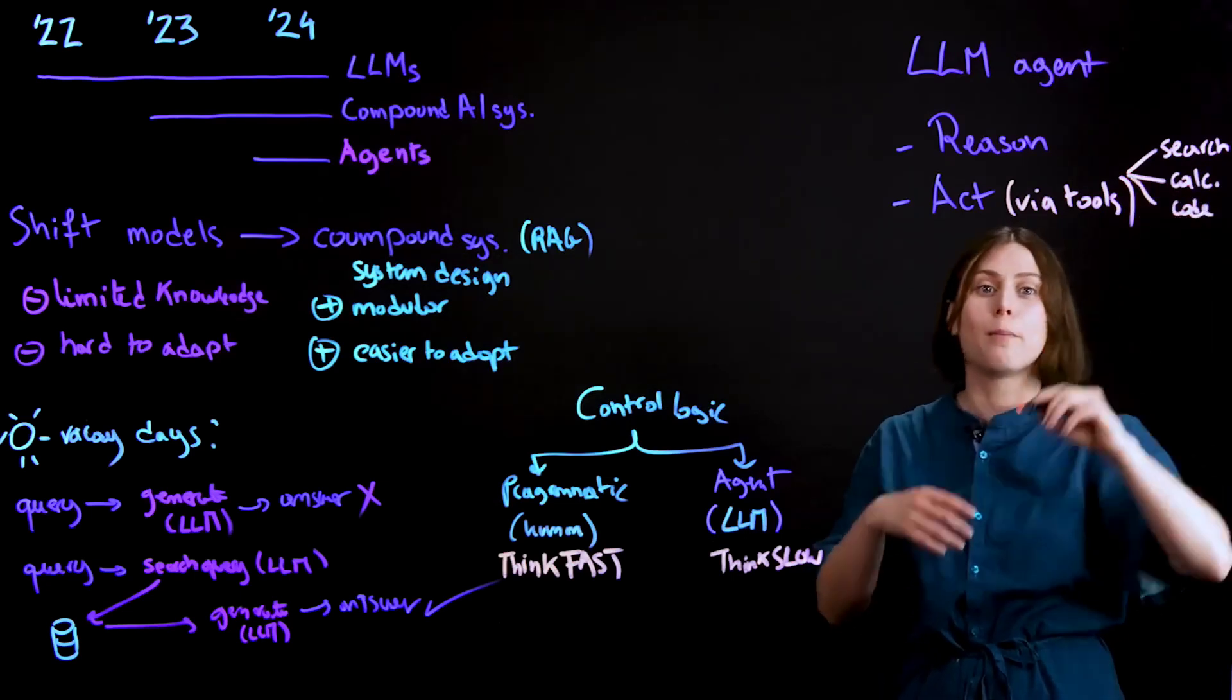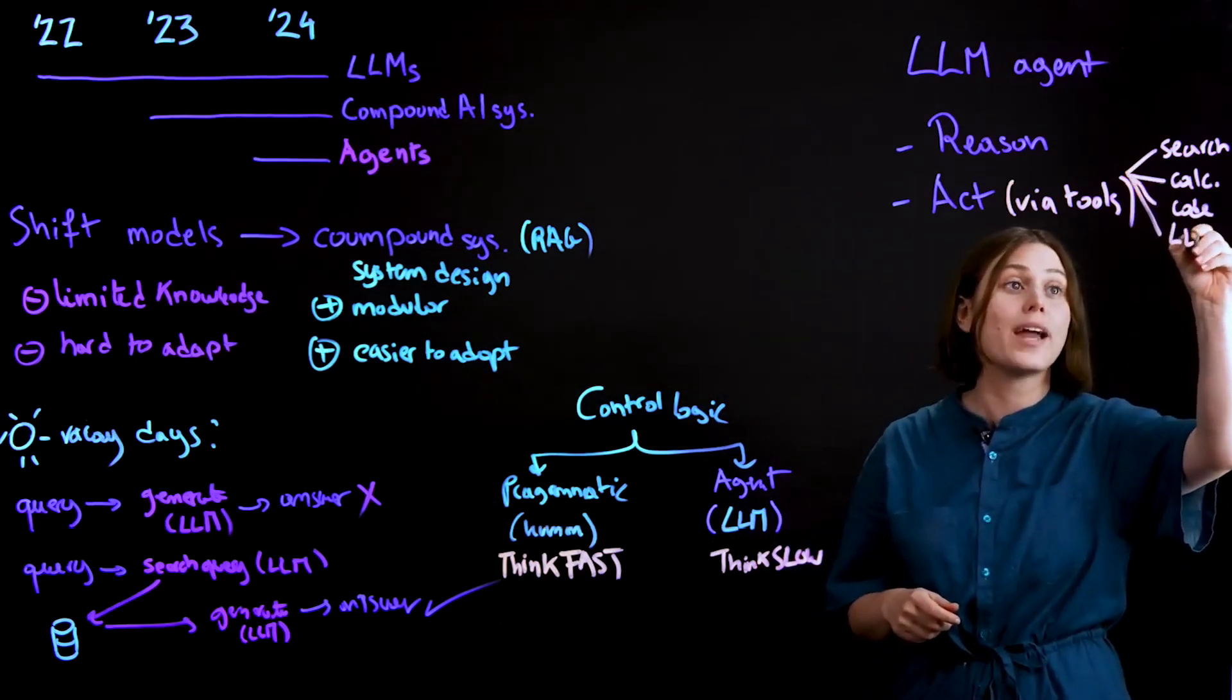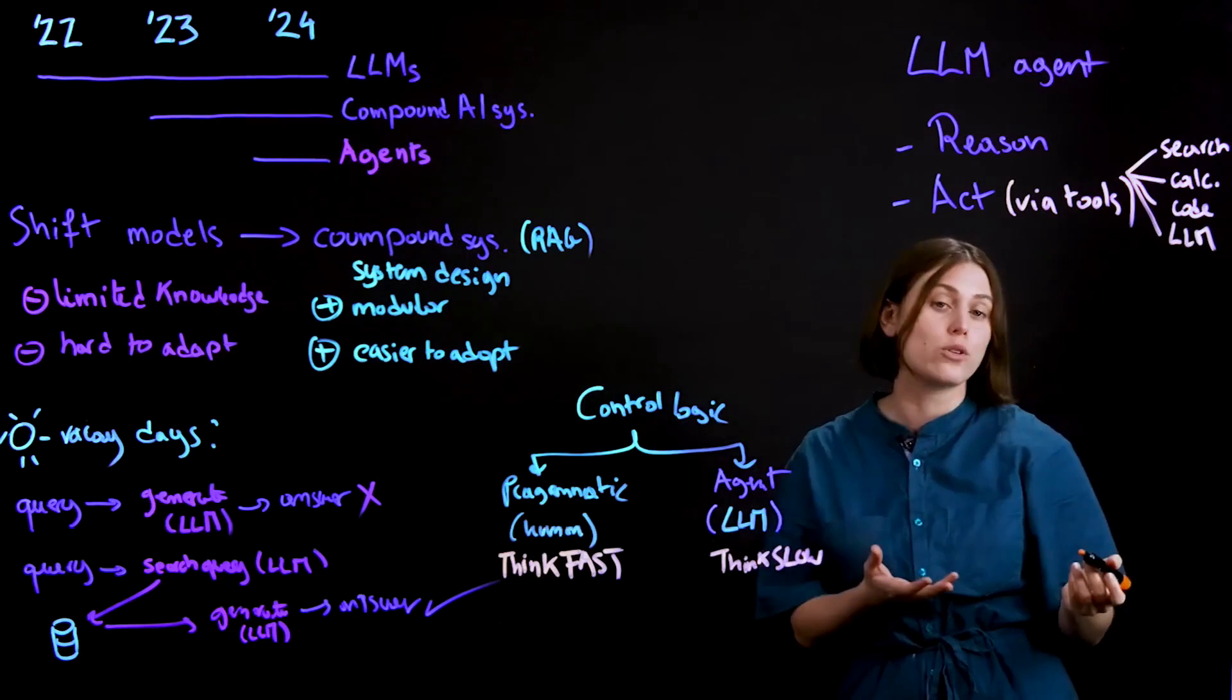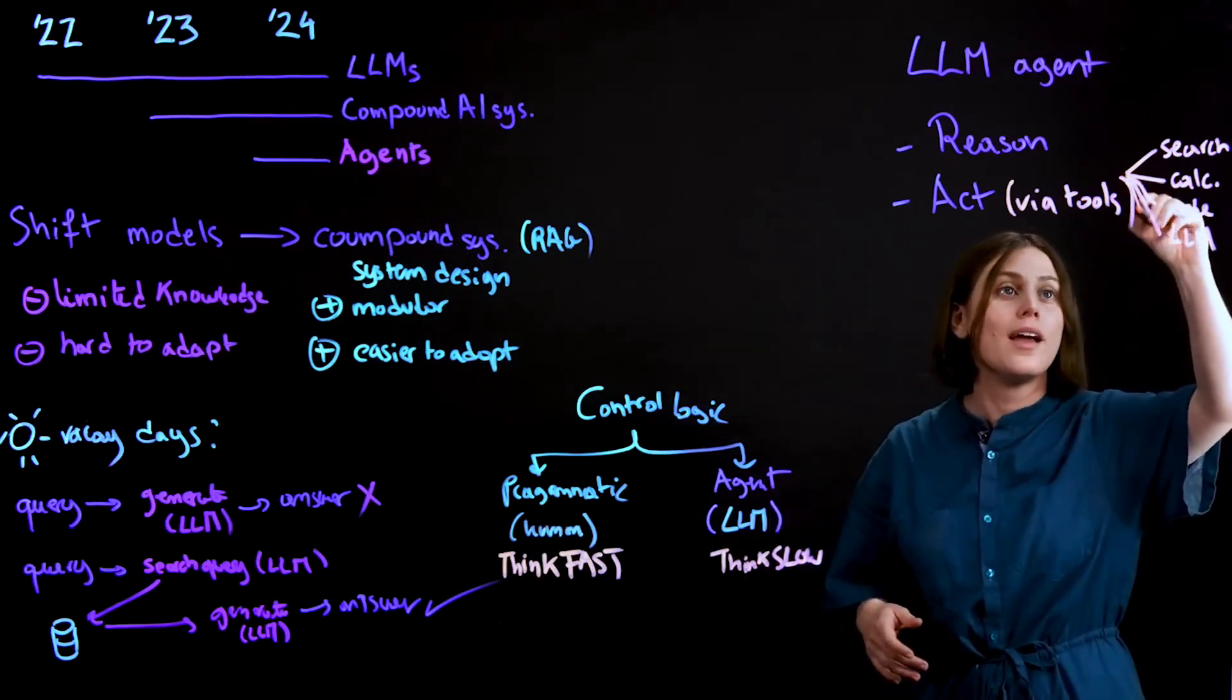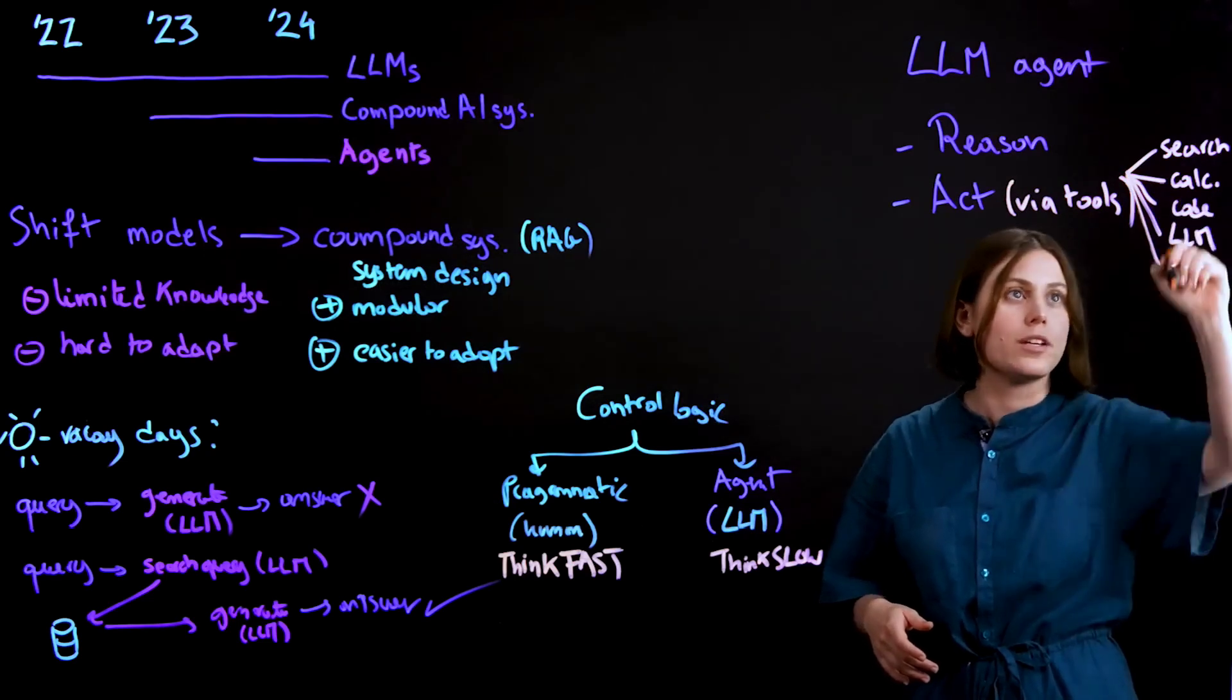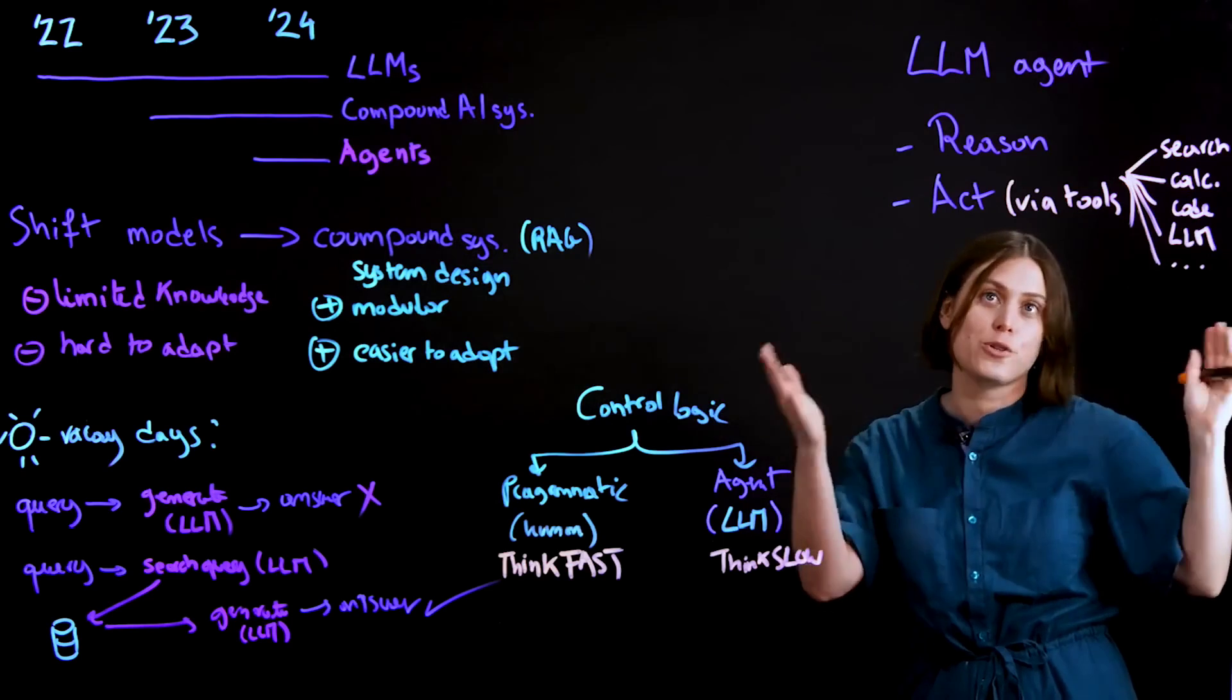This could be a piece of program code that maybe might manipulate the database. This can also be another language model that maybe you're trying to do a translation task and you want a model that can be able to do that. There's so many other possibilities of what they can do - these could be APIs, basically any piece of external program you want to give your model access to.